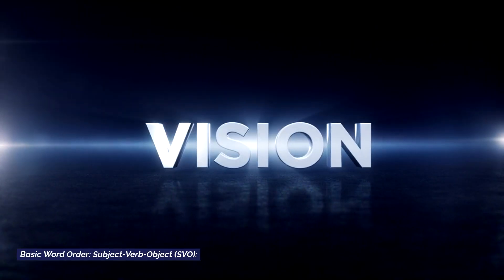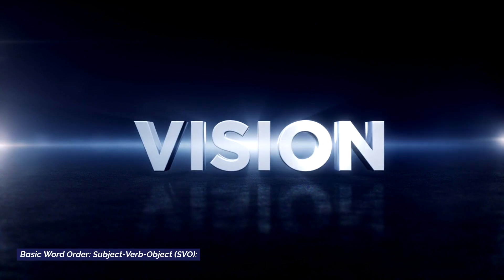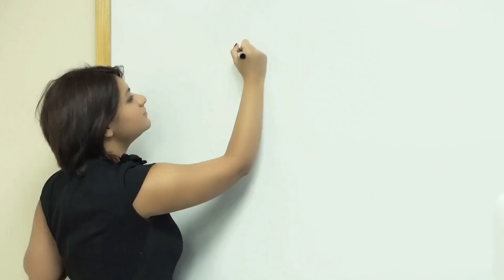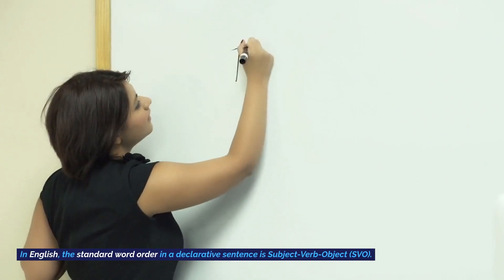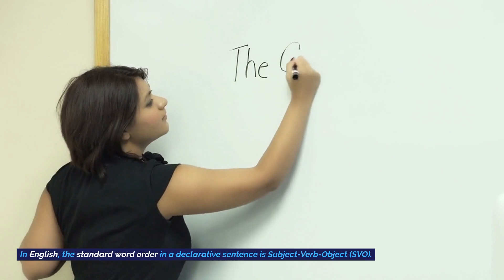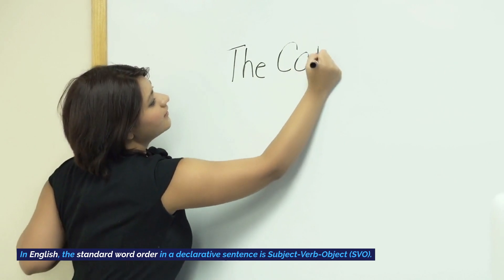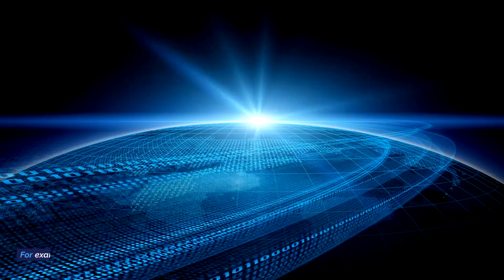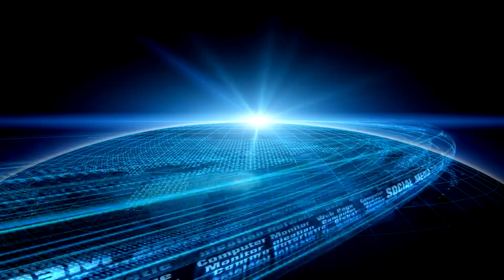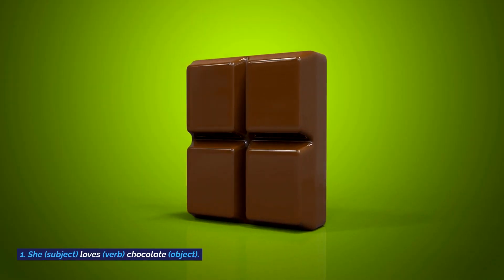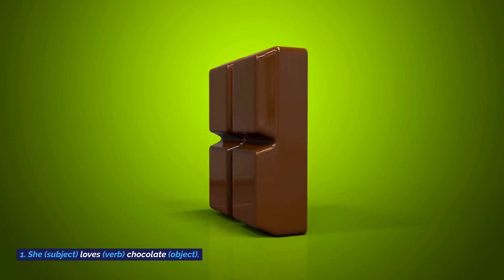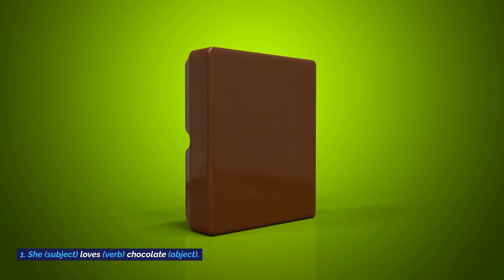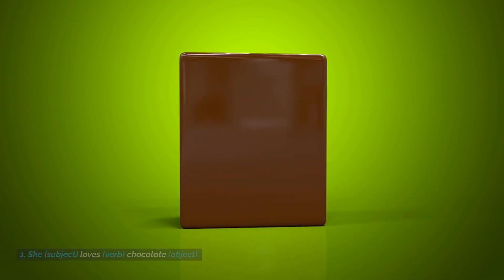Basic word order: subject-verb-object. In English, the standard word order in a declarative sentence is subject-verb-object. For example: 'She' (subject) 'loves' (verb) 'chocolate' (object).